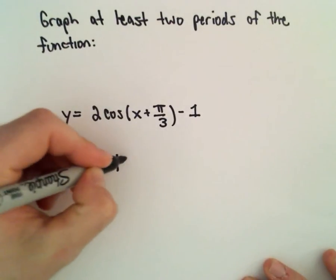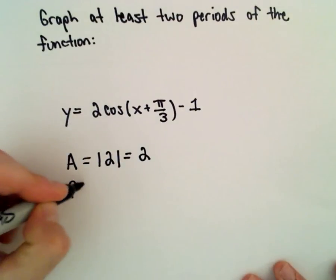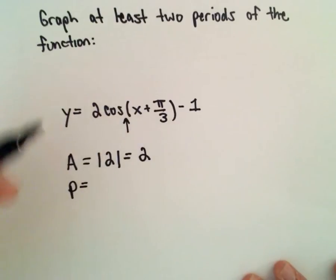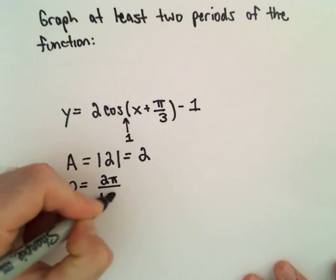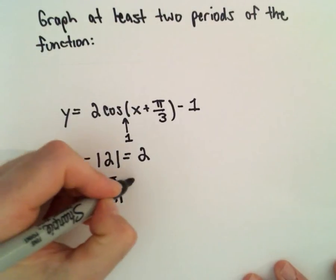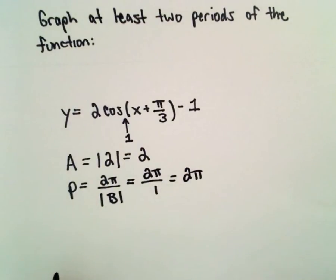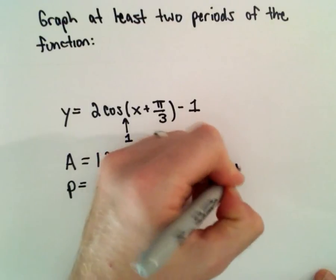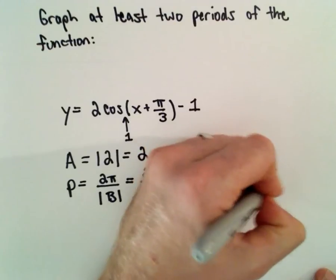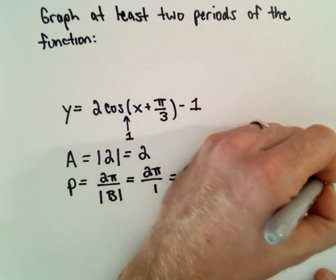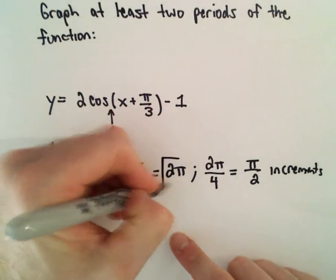The amplitude for this new function will be the absolute value of 2, which is 2. The period — if I look at the value in front of the parentheses, you can imagine there's an invisible 1 in there. That's our b value in the formula 2 pi divided by the absolute value of b. So we'll have 2 pi over 1, or 2 pi, so the period hasn't changed. To get my increments, I divide that by 4, which gives me pi over 2. Those are going to be my increments on the x-axis, and 2 pi is definitely the period.